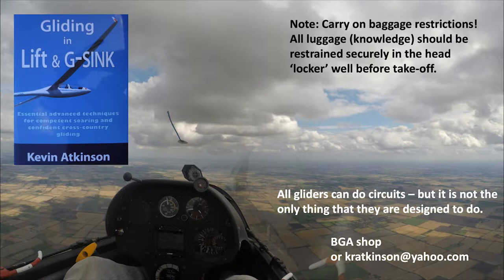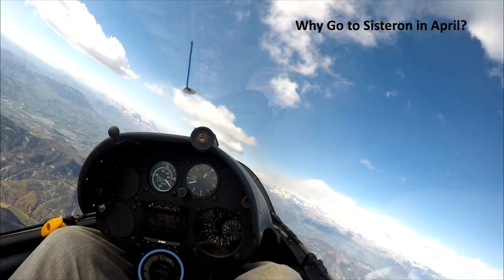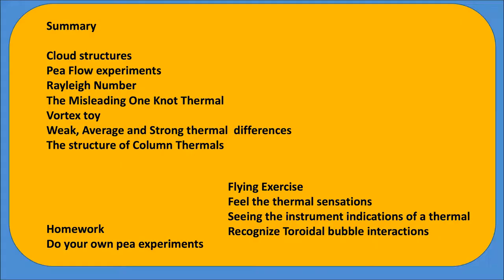It's not the only thing that they are designed to do. Why go to Cisteron? Well, here we are at 10,700, climbing at something like 7 knots. Summary topics: cloud structures, the P-flow experiments, Rayleigh number, the misleading 1-knot thermal, the vortex toy, weak, average and strong thermal differences, and the structure of column thermals.